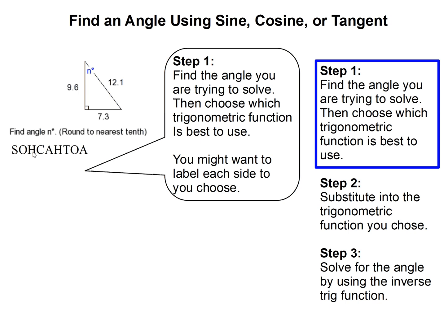over the hypotenuse. The cosine is the adjacent side over the hypotenuse. And the tangent of the angle is the opposite side over the adjacent side. So here, let's take a look.